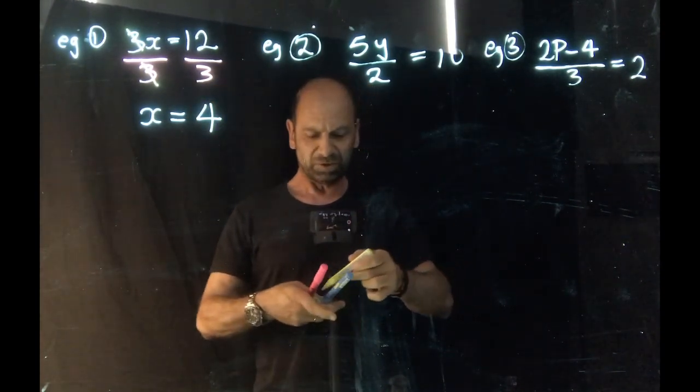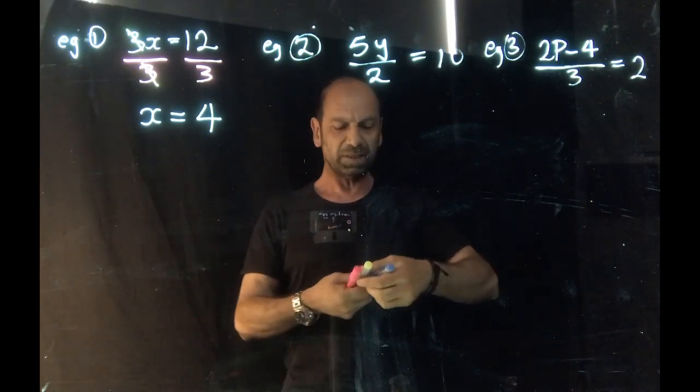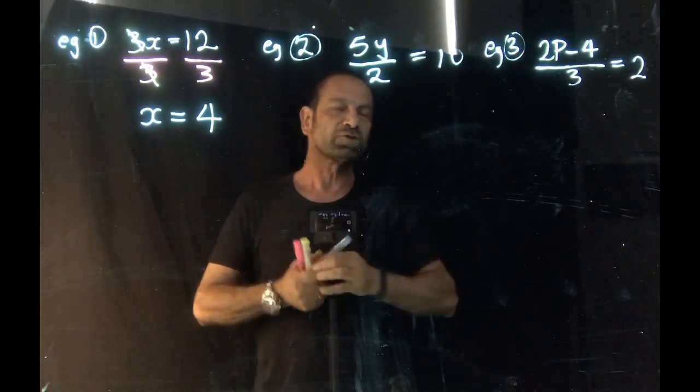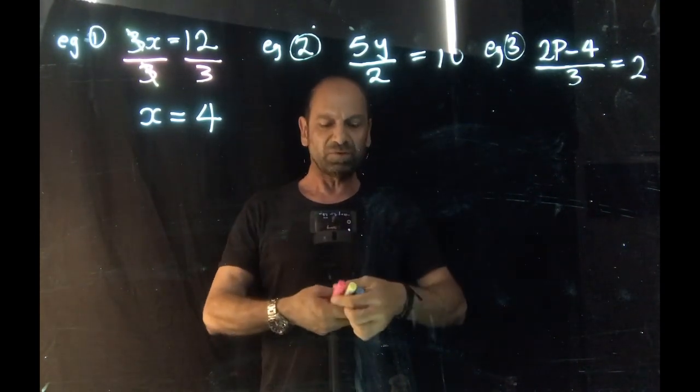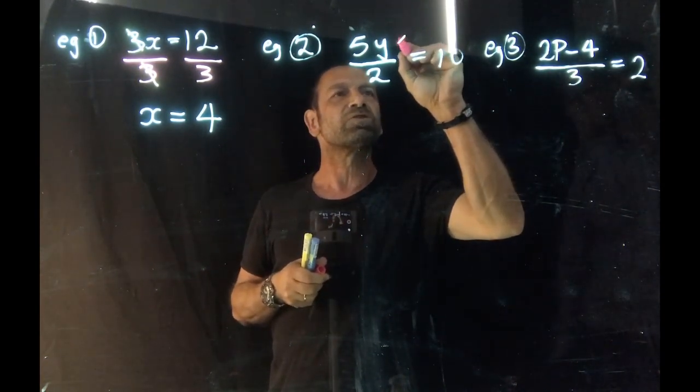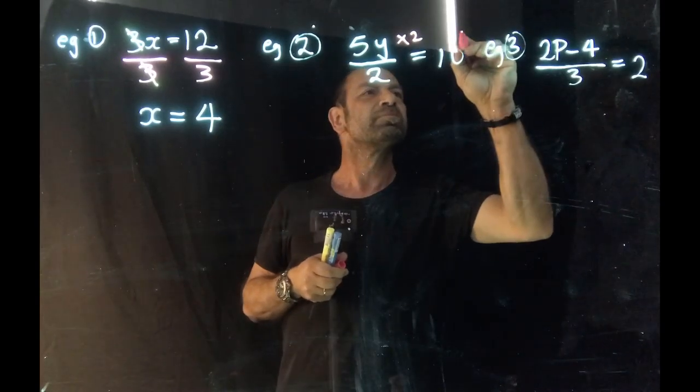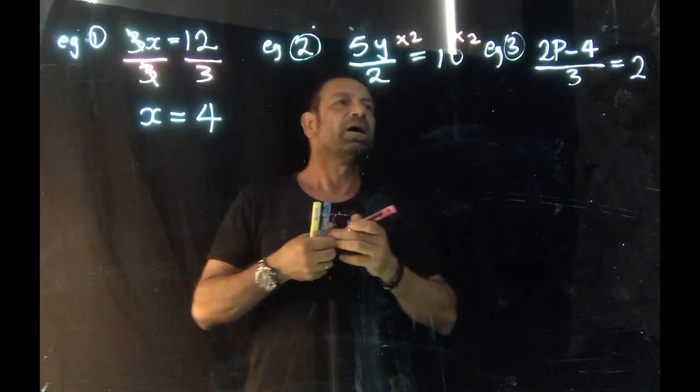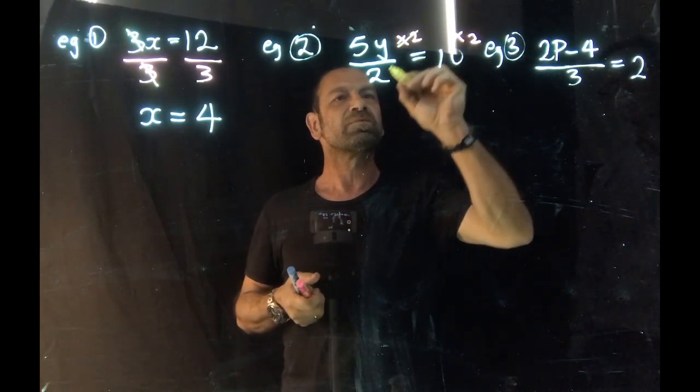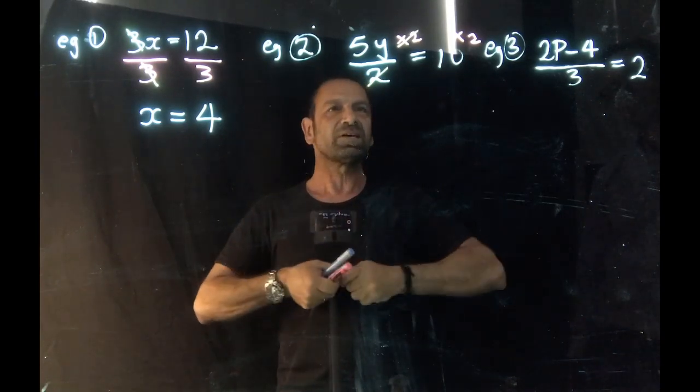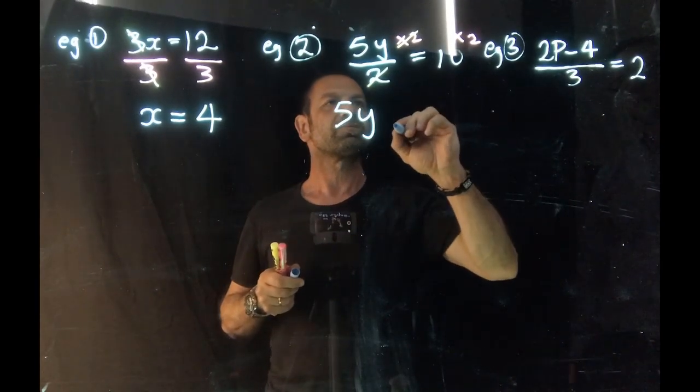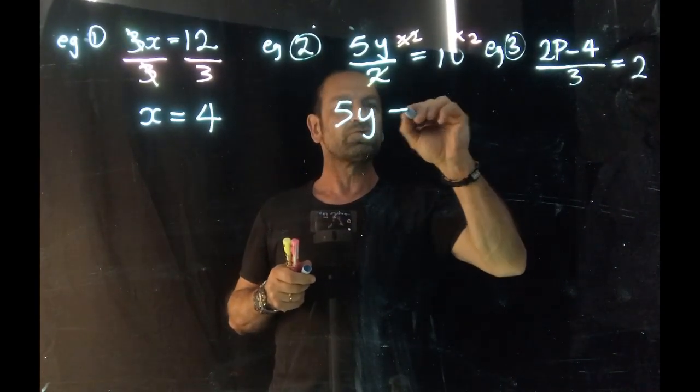So in this case, the variable is y. To begin here, we're going to multiply by 2 because we're dividing by 2. Reverse operation means we're going to multiply by 2. So we're going to do that to both sides. And by doing that, that enables us to cancel the 2s, leaving us here with 5y equals to 20.